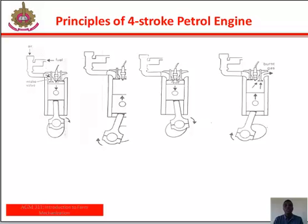The fourth stroke is called the exhaust stroke. The crankshaft rotates to push the connecting rod upward, which in turn moves the piston upwards from the bottom dead center to the top dead center. In this process, the products of combustion are pushed out of the cylinder through the opening exhaust valve. The inlet valve remains closed during the fourth stroke. The cycle and series of events continue as long as the engine operates.